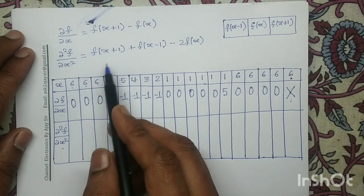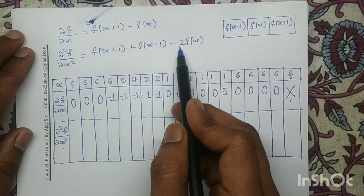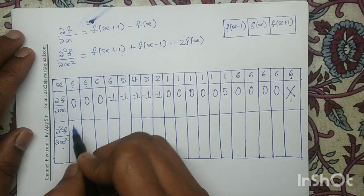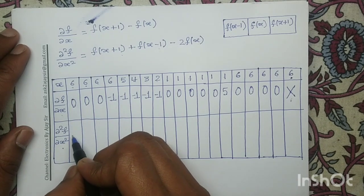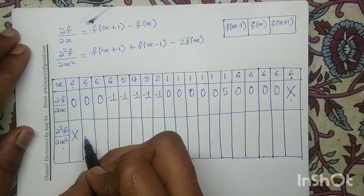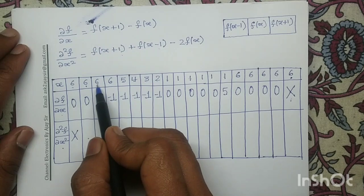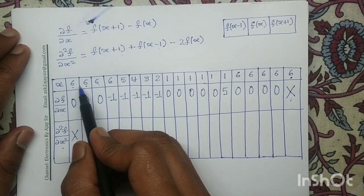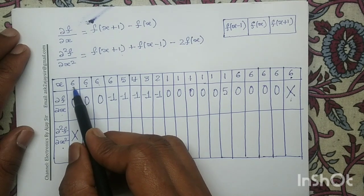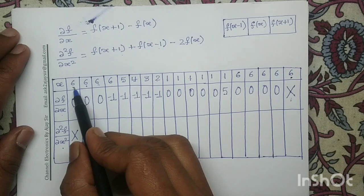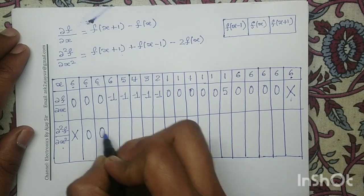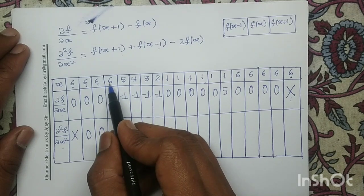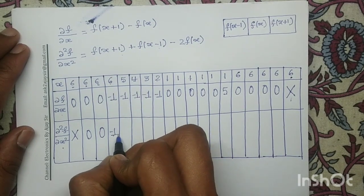Next we compute the second order derivative. Its equation is f(x+1) plus f(x-1) minus twice f(x). At the very first position, f(x-1) is not defined so we put a cross mark. At the second position: 6 plus 6 minus 2×6 = 0. At the next, 6 plus 6 minus 2×6 = 0. Then 5 plus 6 minus 2×6 = −1.